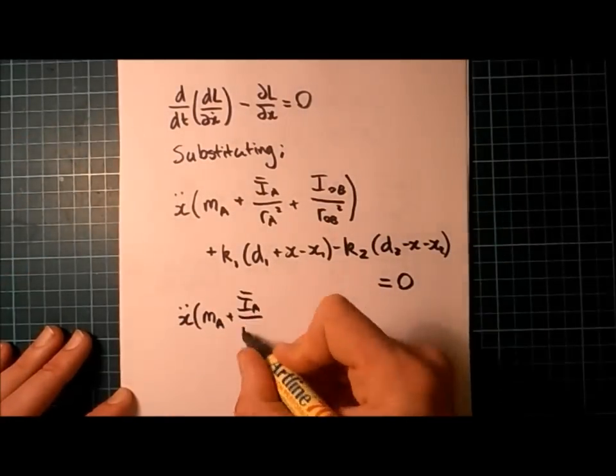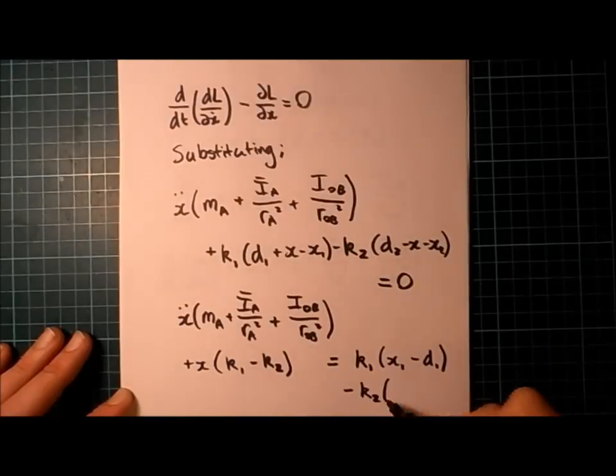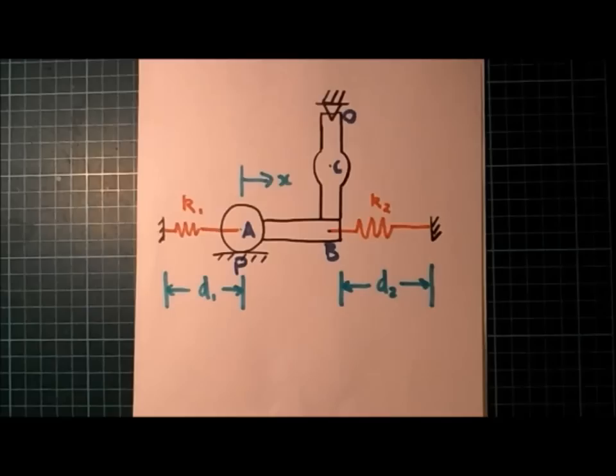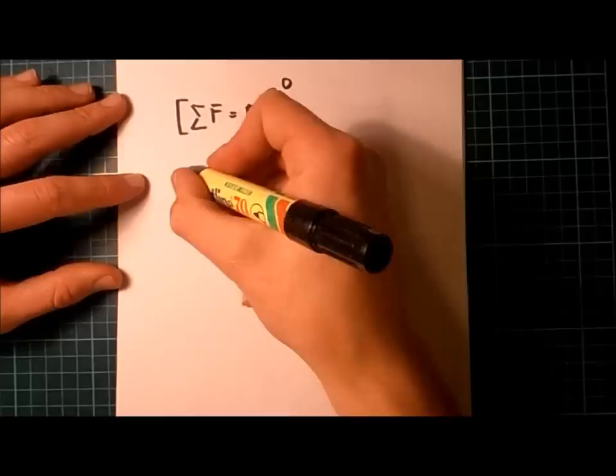But we come up against a problem. Our equation has a coefficient of x dot, a coefficient of x, and also a constant term at the end. Now, normally, vibration questions don't have that constant term.